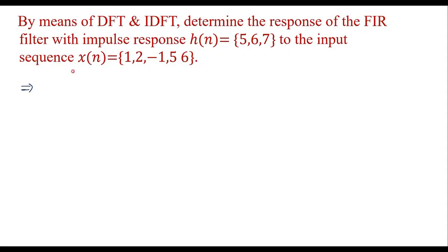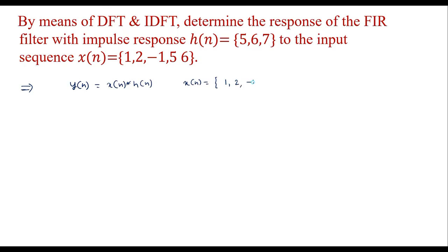The response of the FIR filter means we are supposed to perform the linear convolution between X(n) and H(n), that is Y(n) = X(n) * H(n), which is the linear convolution between X(n) and H(n). Here X(n) is given as {1, 2, -1, 5, 6}.